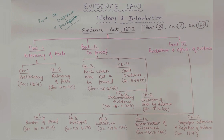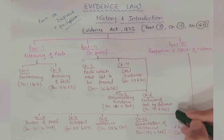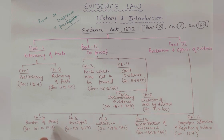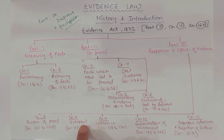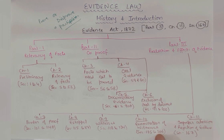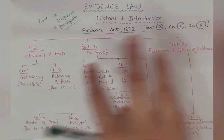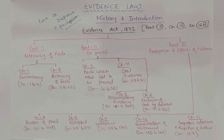Part third is production and effect of evidence - how we produce evidence and what will be their effects. First is burden of proof, estoppel, witness, examination of witness, and improper admission and rejection of evidence. In all these we will cover section 167.